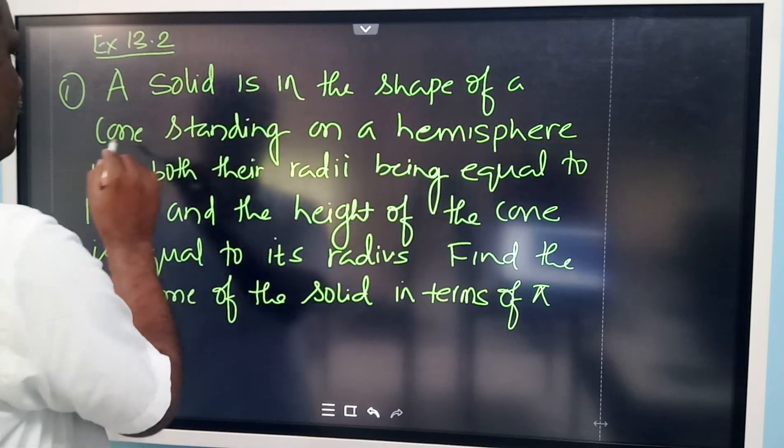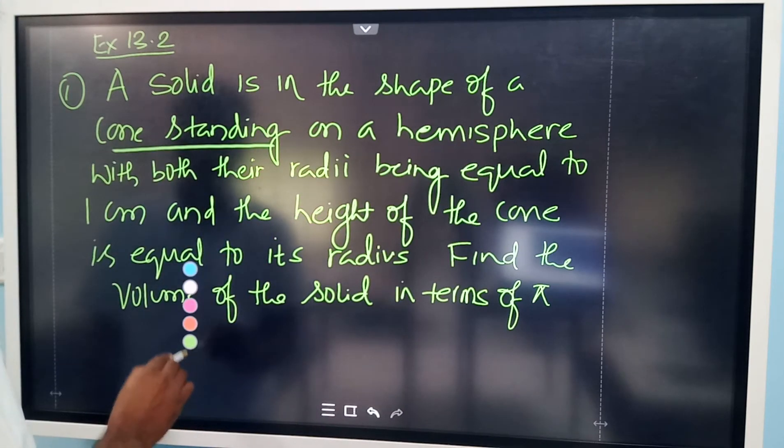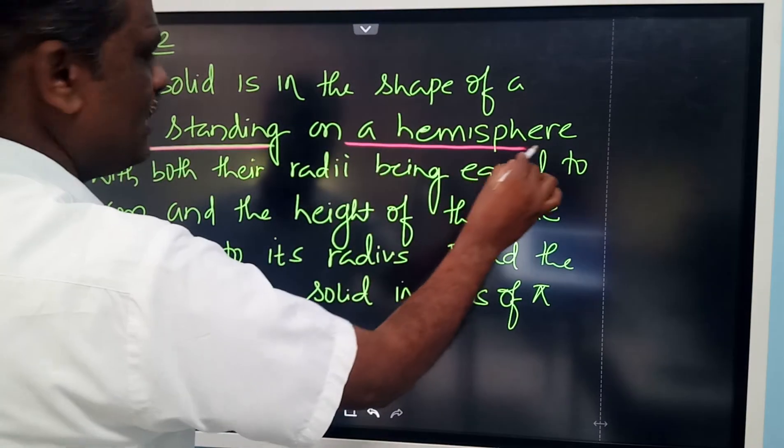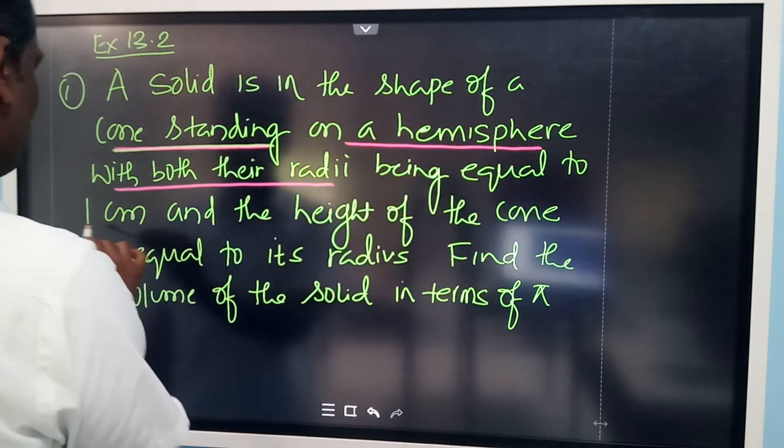See here. A solid is in the shape of a cone standing on a hemisphere, with both their radii being equal to 1 centimeter.